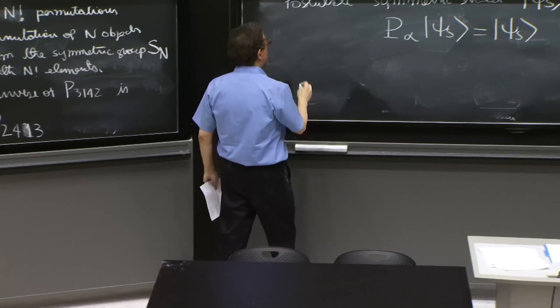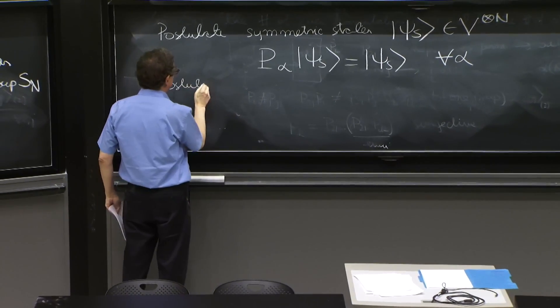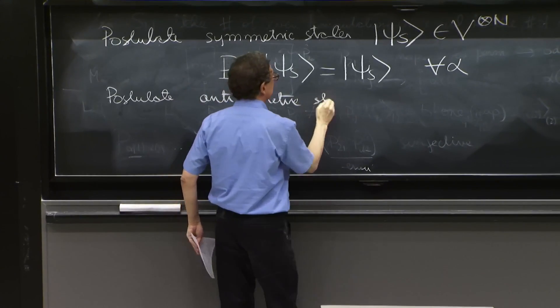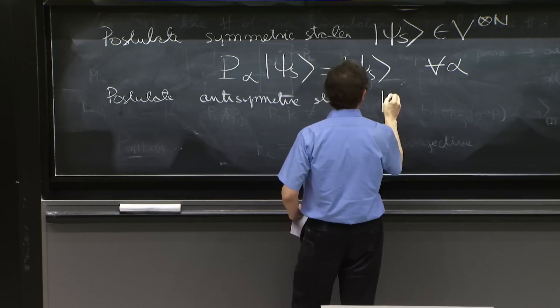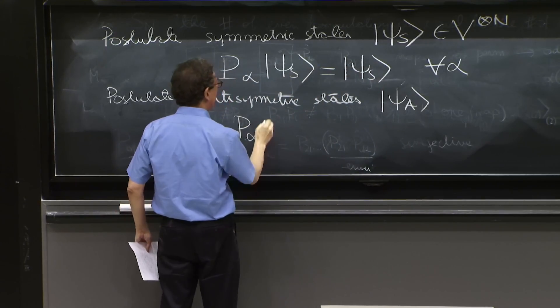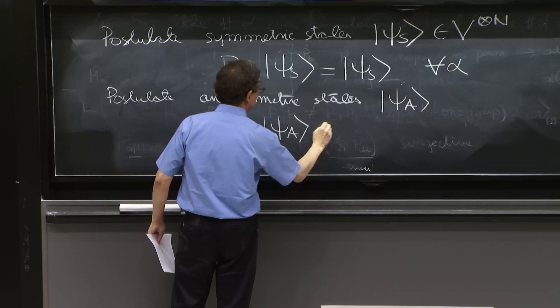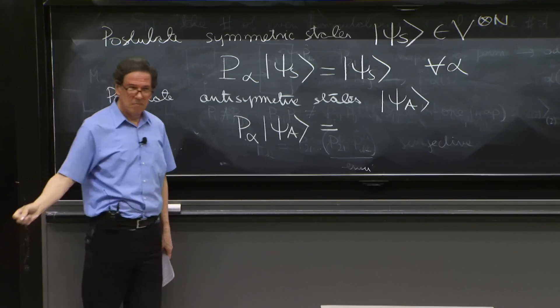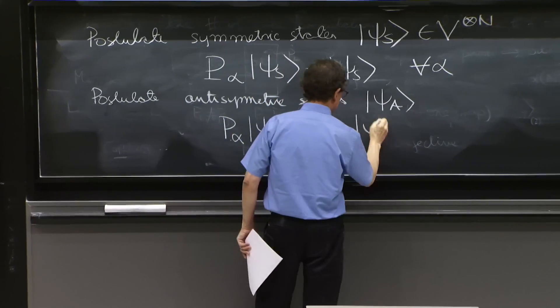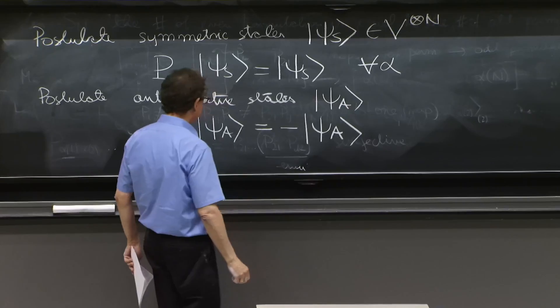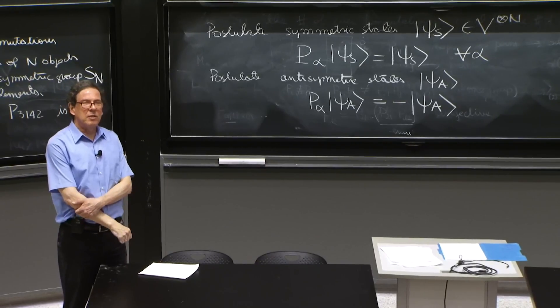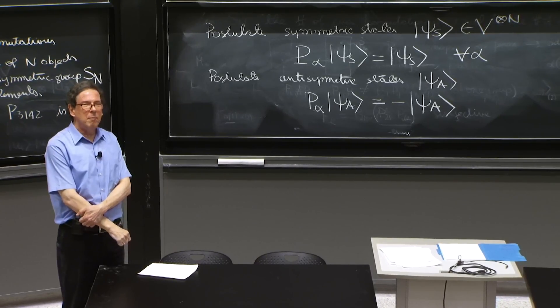How about defining now postulate anti-symmetric states? P_alpha on psi_a should then be equal to, what should I put? Negative psi_a. Well, yeah, that's the first thing we would put. But that's pretty problematic, actually.